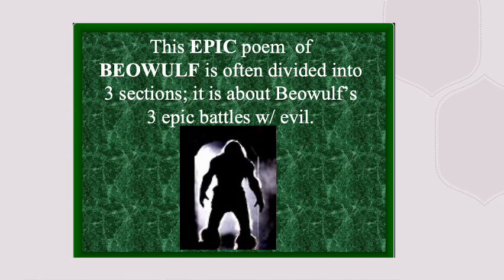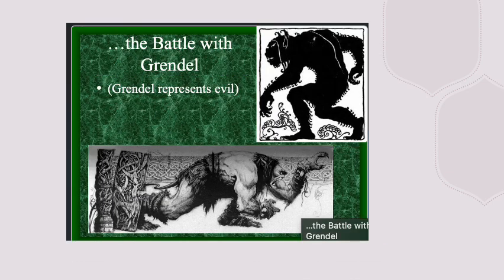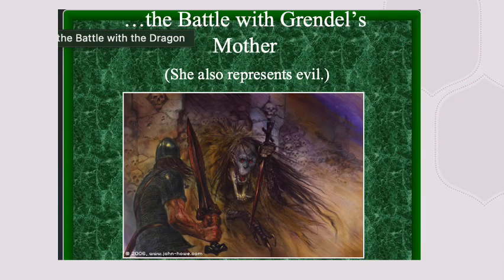Beowulf is divided into three sections, all about Beowulf's epic battles with forces of evil. We start with his battle with Grendel, who represents evil and is a monster that attacks Herot — where the Danes live — slaughtering them. Beowulf, who is from the Geats, will come to their rescue.